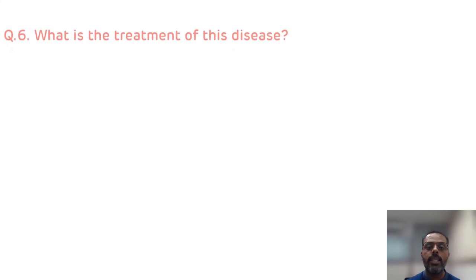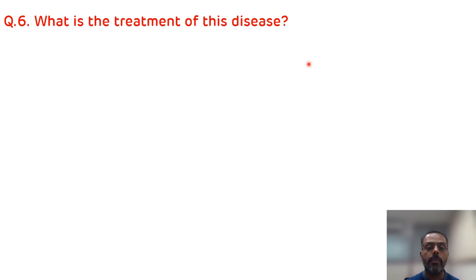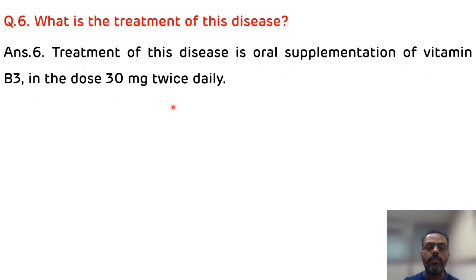The last question is: what is the treatment of this disease? The treatment is oral supplementation of vitamin B3 in the dose of 30 mg twice daily. That is the treatment of pellagra, which occurs due to the deficiency of vitamin B3, also known as niacin.